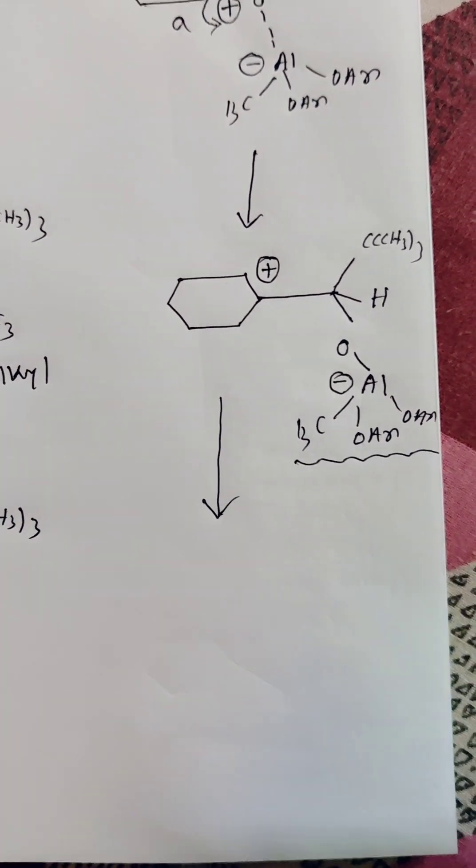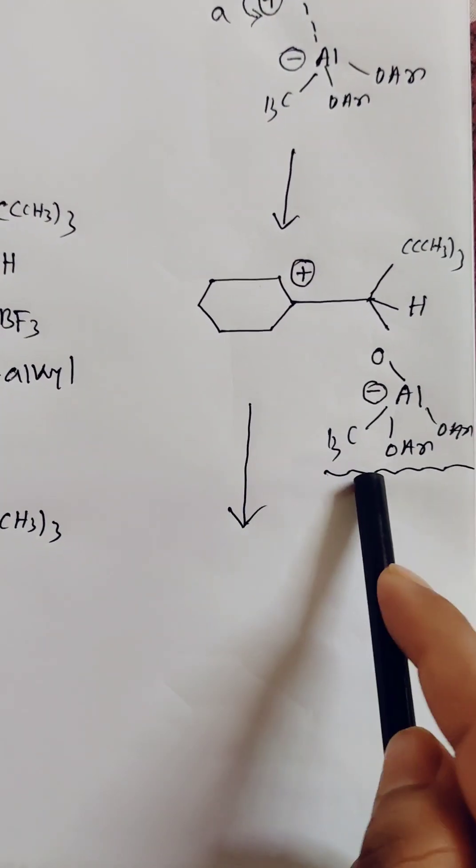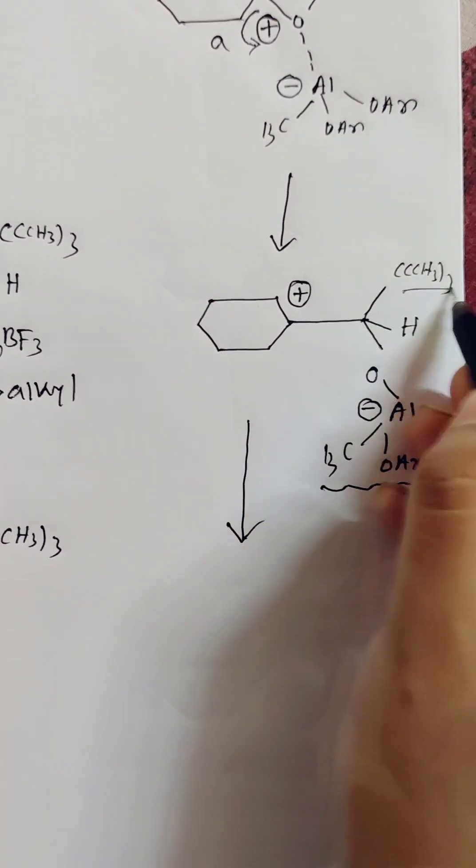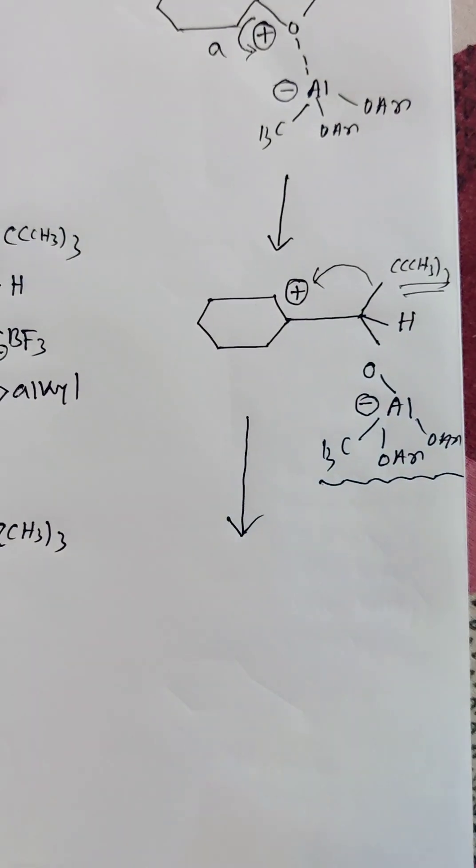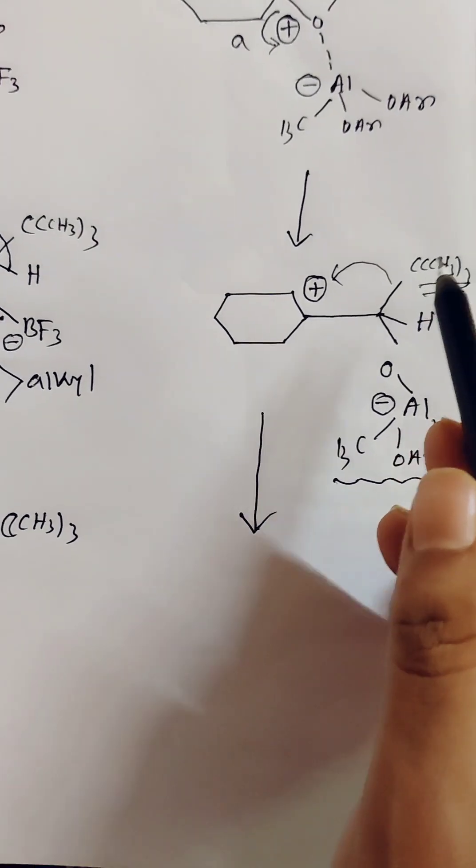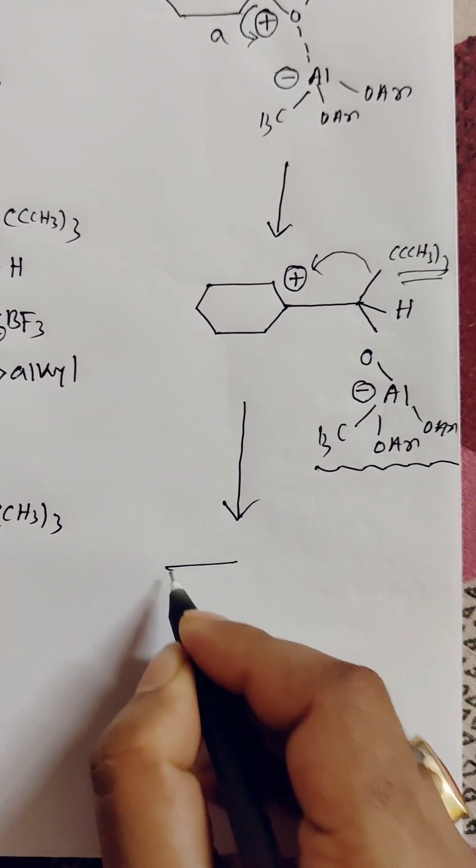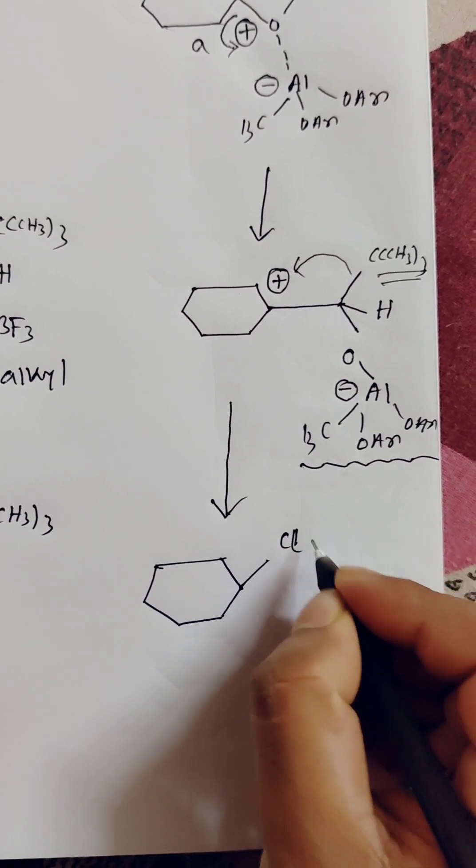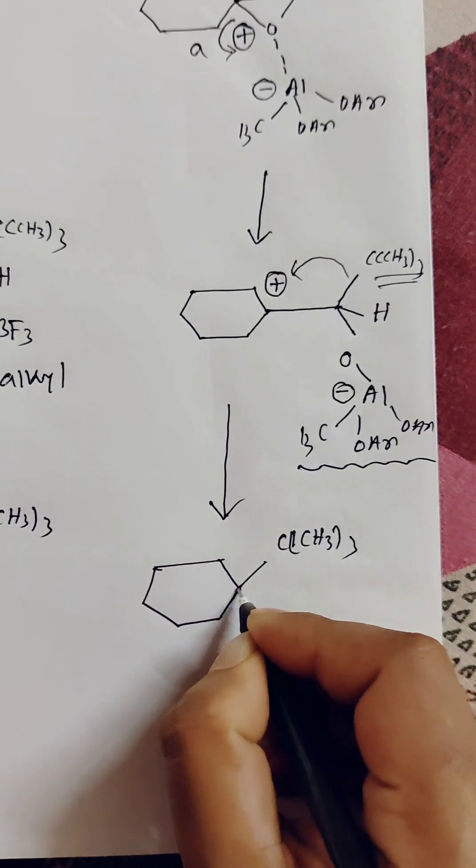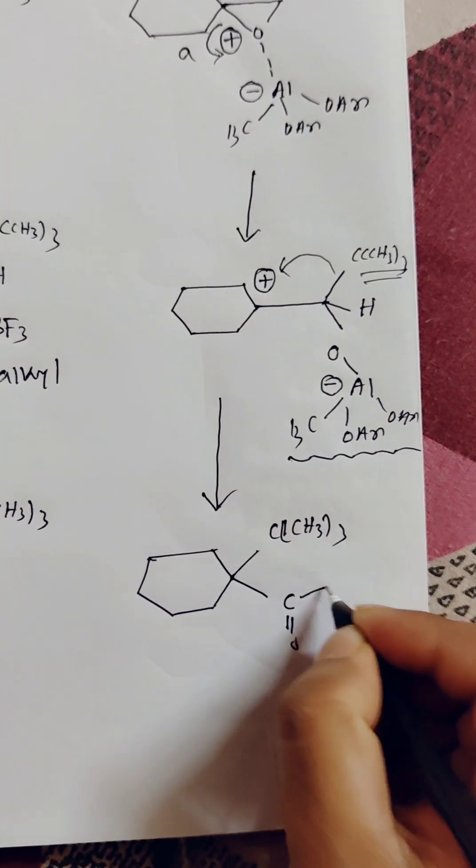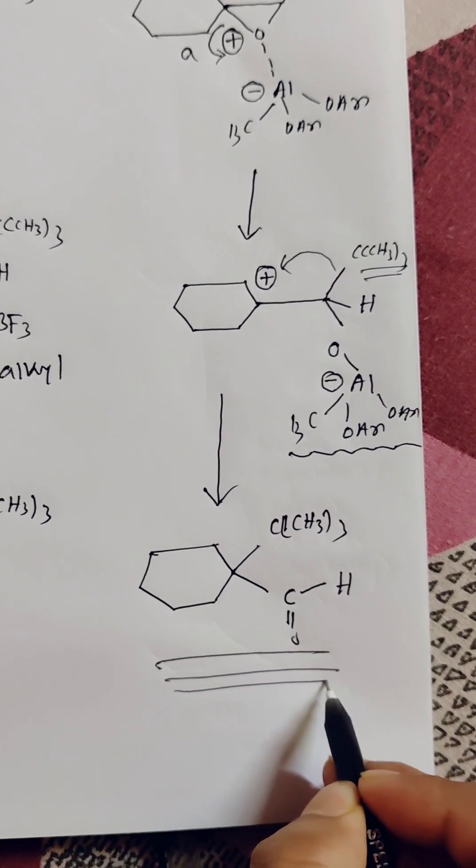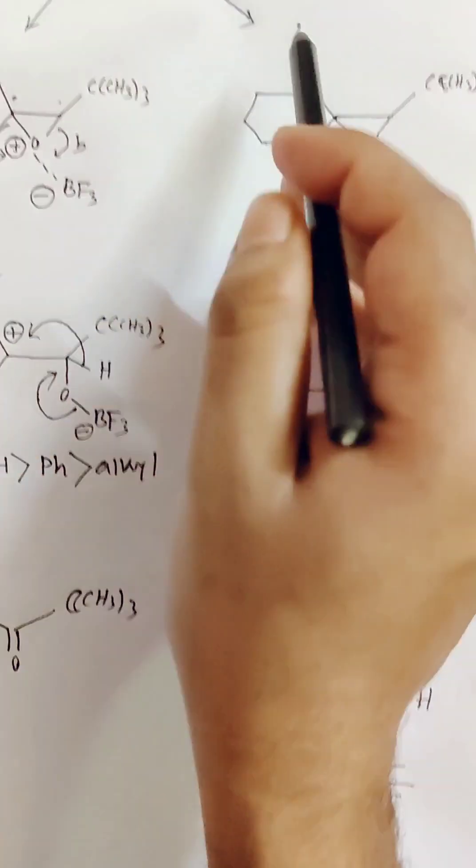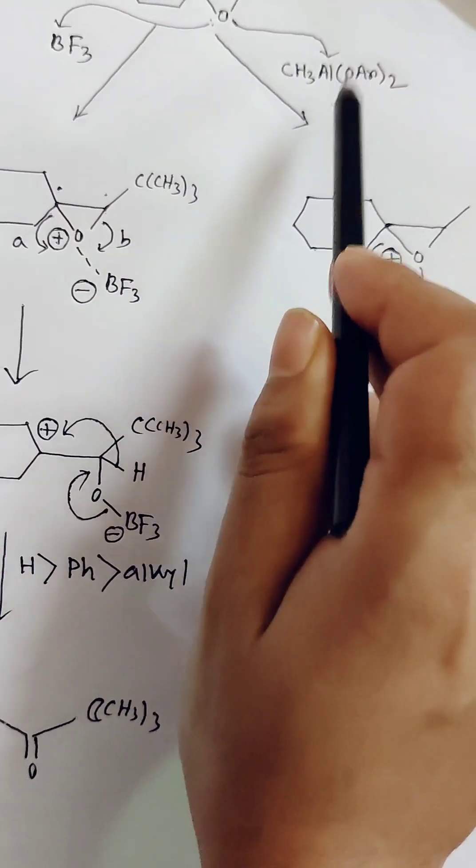...this aluminium reagent is already bulky, so it will kick out this bulky alkyl group as it has no room to place this alkyl group. So in this case, the migration of this alkyl group will take place and it will form an aldehyde rather than a ketone. That's why this aluminium reagent is very special—this is a bulky reagent.